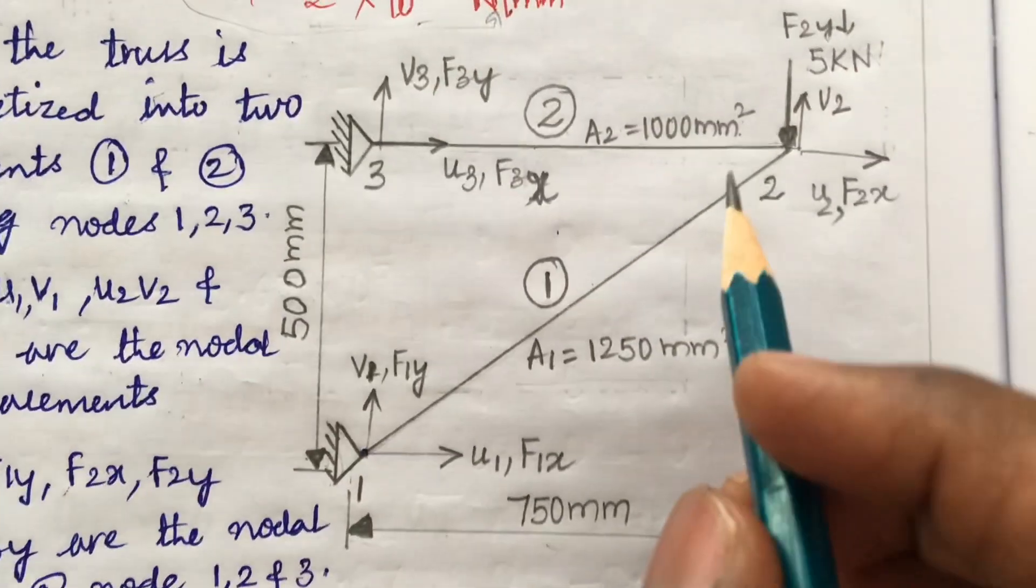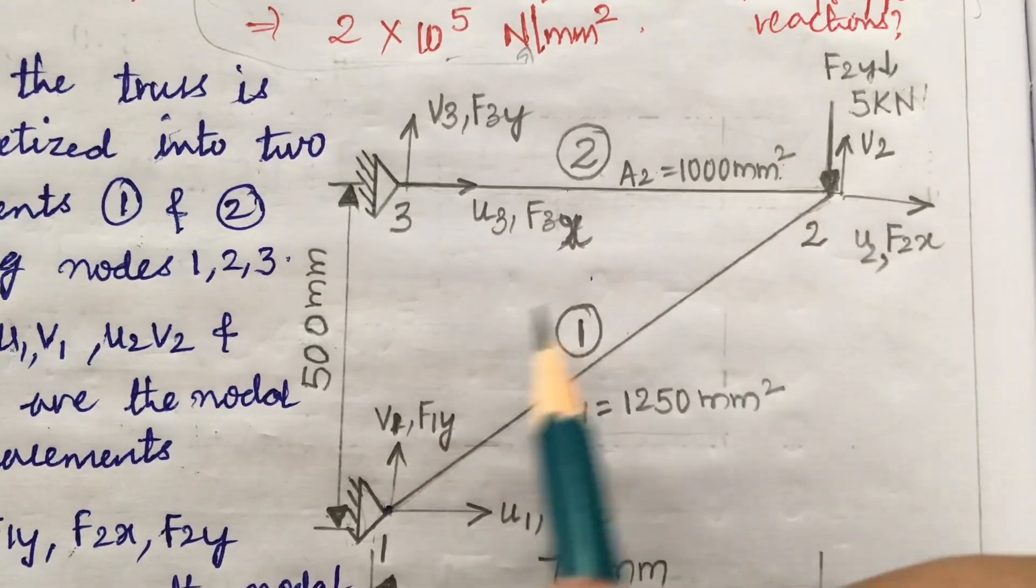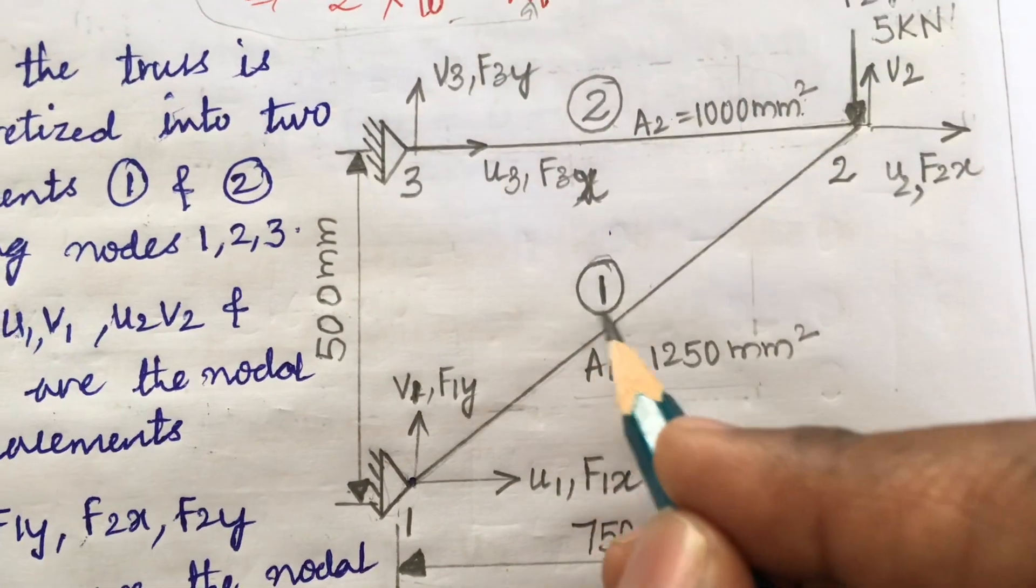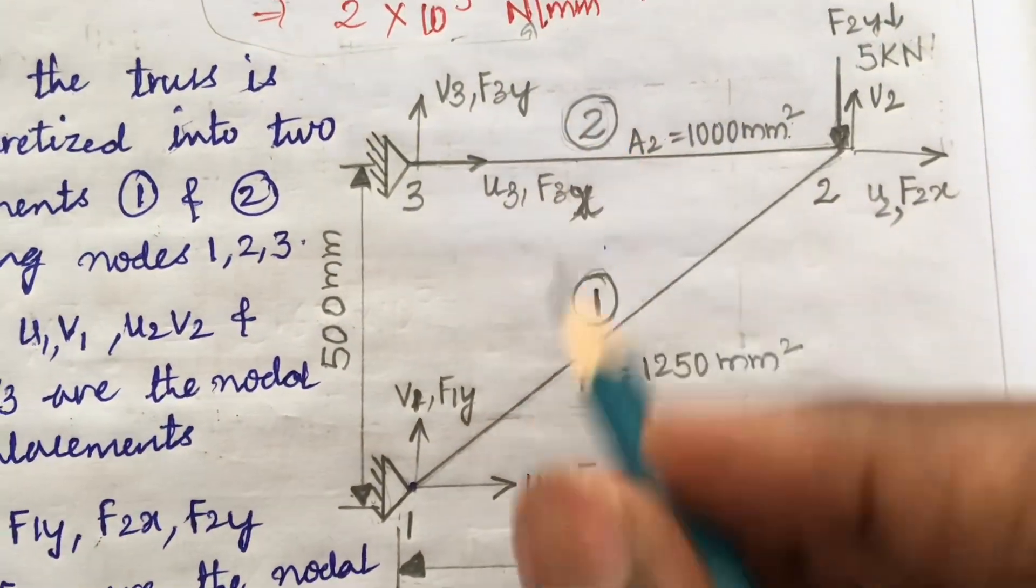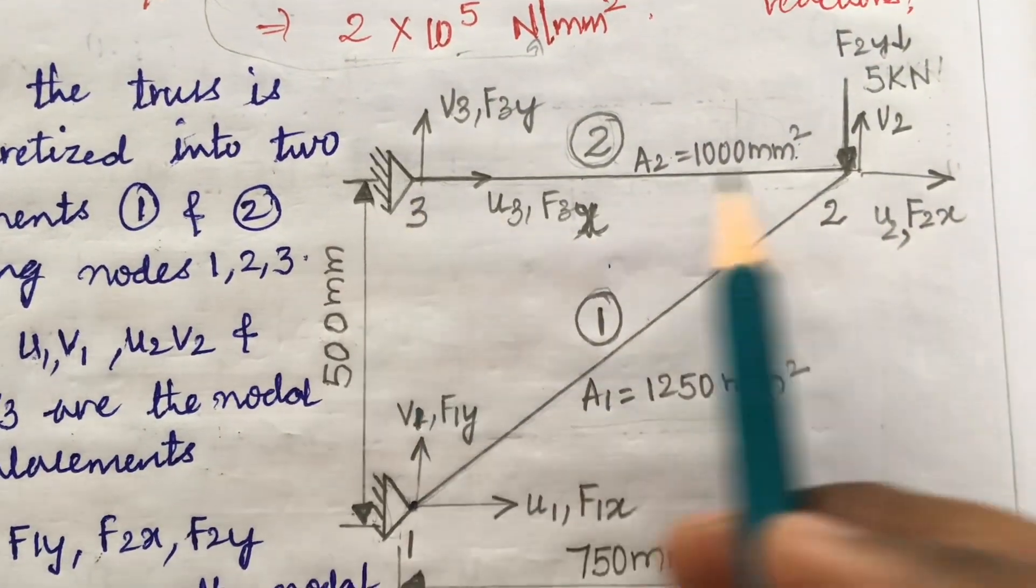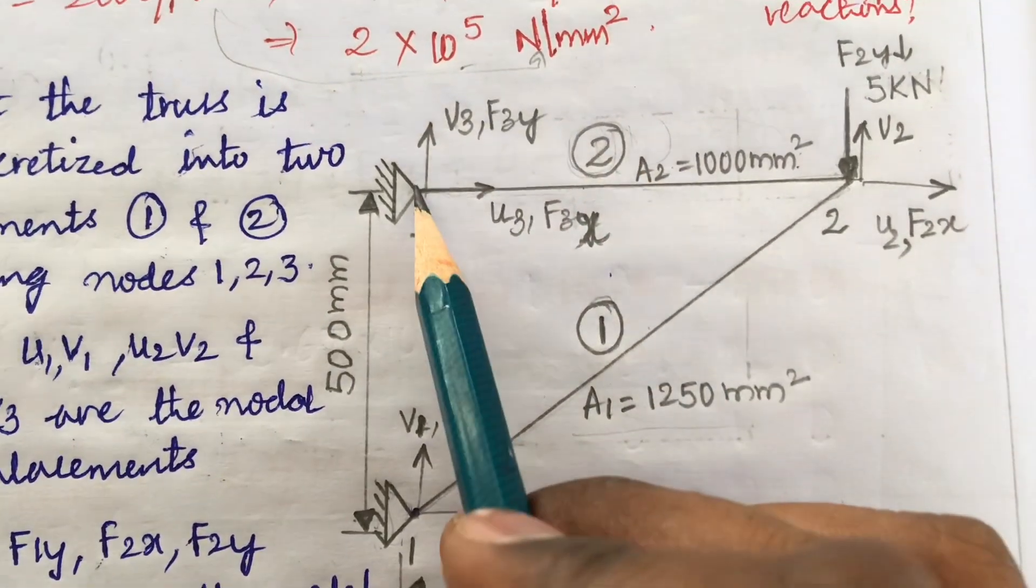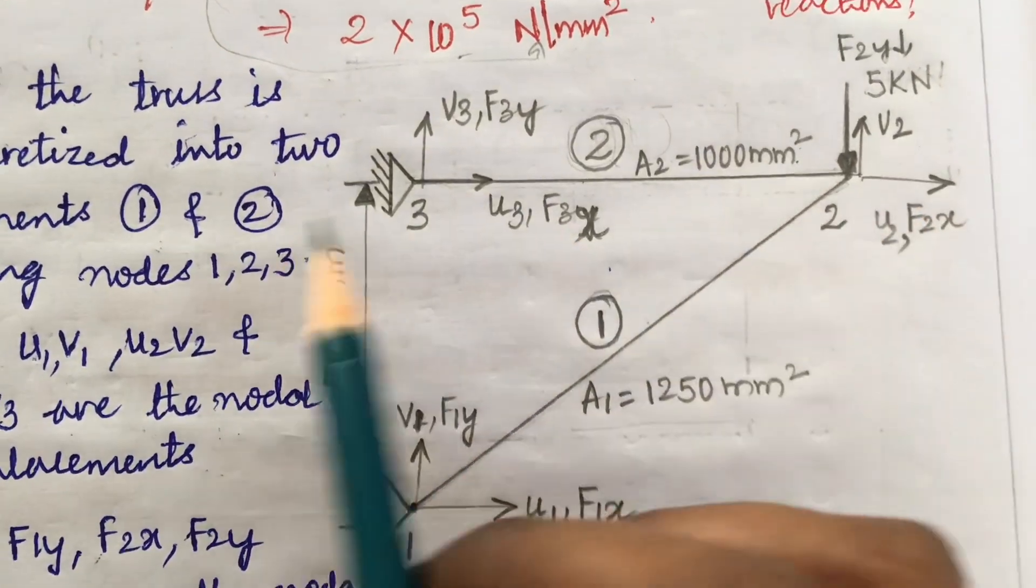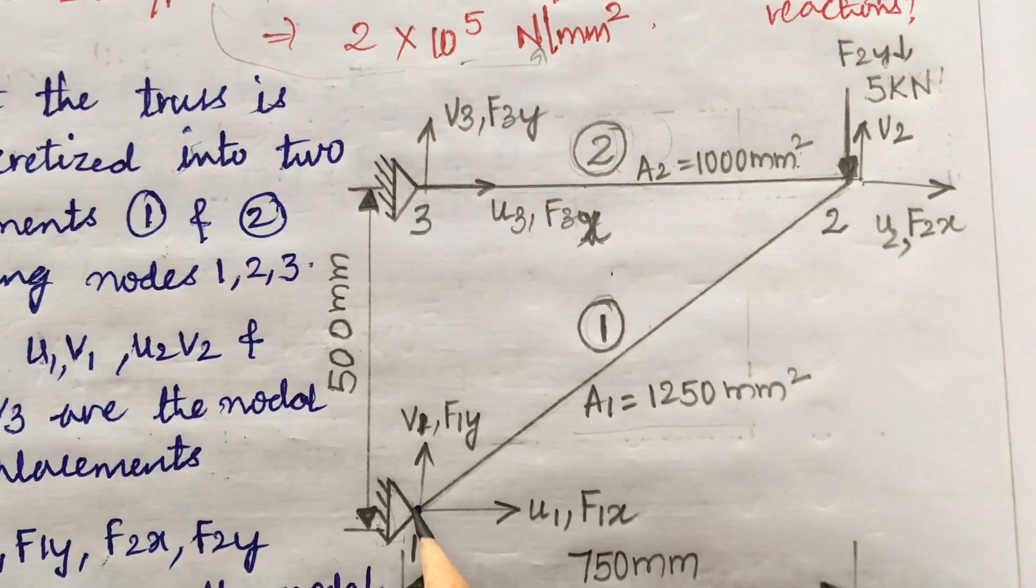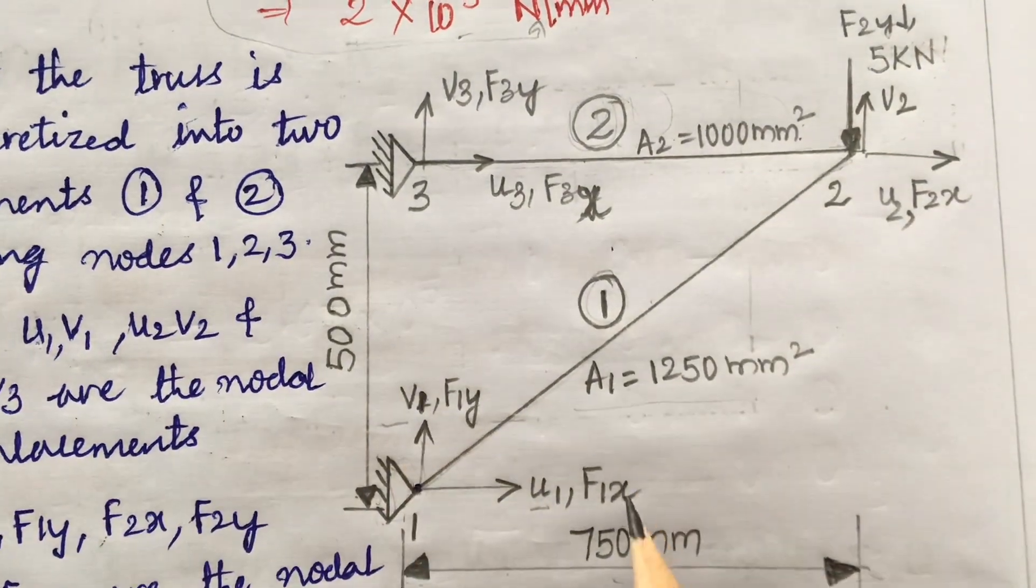The length of element one is given as 750 millimeter along the x-coordinate, and along the y-coordinate that is given as 500 millimeter. Now even the load is also acting here, that is 5 kN in the F at the second node. This is element one which I have circled here, and this is element two.